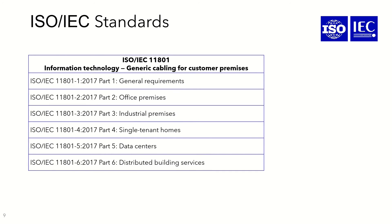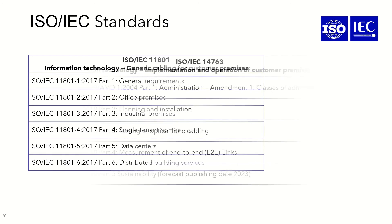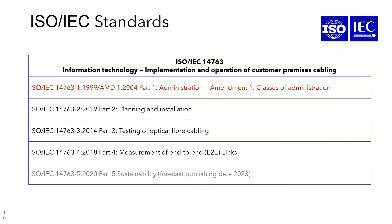ISO/IEC 11801 now covers generic cabling for customer premises under six parts. Part 1 covers general requirements, defining cabling standards, cable categories, and fiber performance including single-mode and multi-mode. Part 2 covers office premises, Part 3 covers industrial premises, Part 4 covers single-tenant homes, Part 5 covers data centers, and the new Part 6 covers distributed building services.